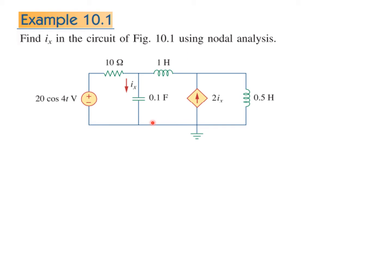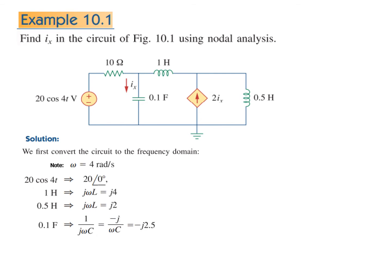This is the circuit. We have to find the current i. As mentioned, the first step is to convert the circuit into frequency domain. For that, we identify omega and then convert all other values. From here you can see cos omega t, so omega is 4 radians per second. So 20 cos t will be magnitude 20 and angle 0 because there is no angle here.